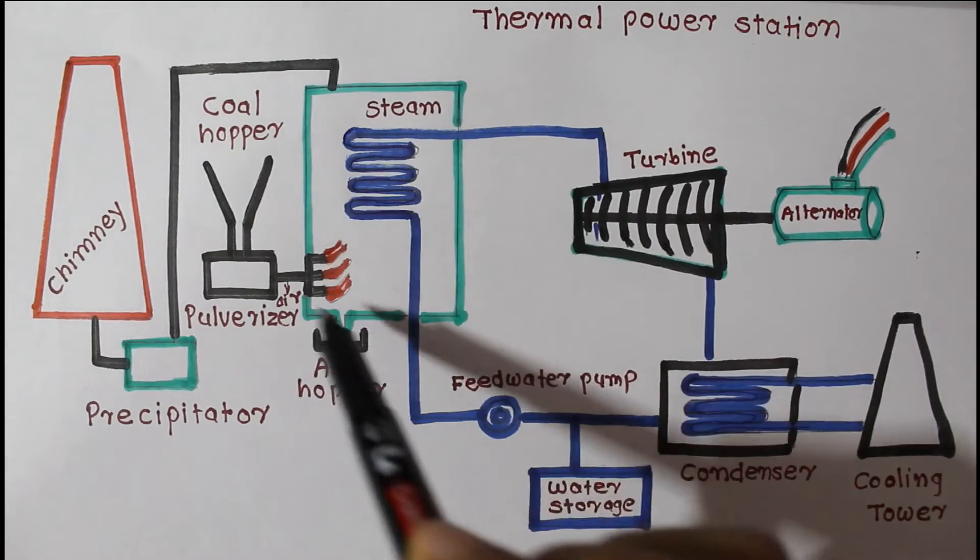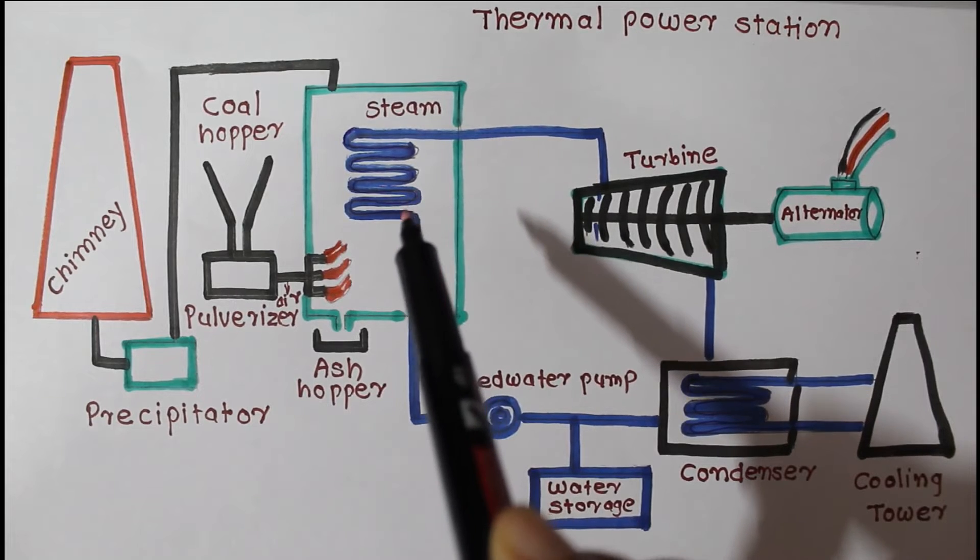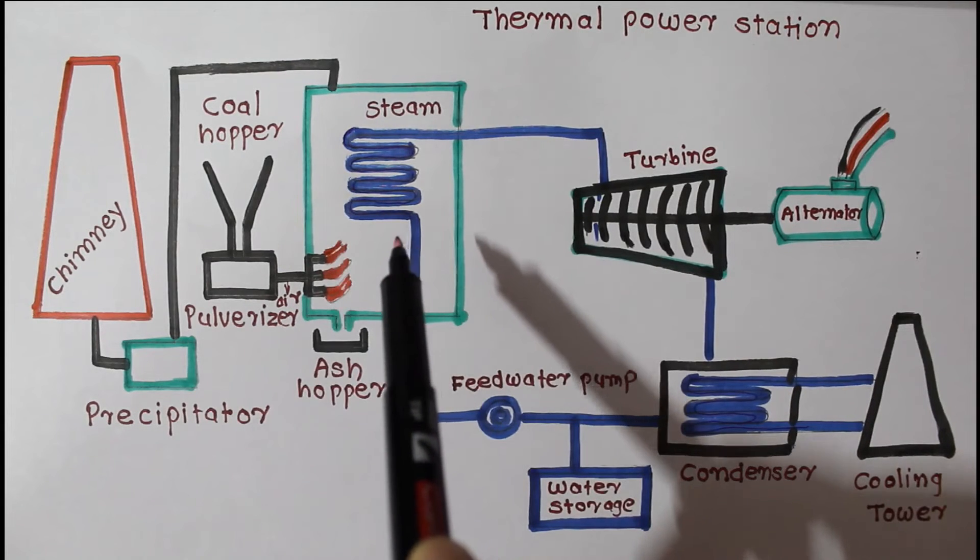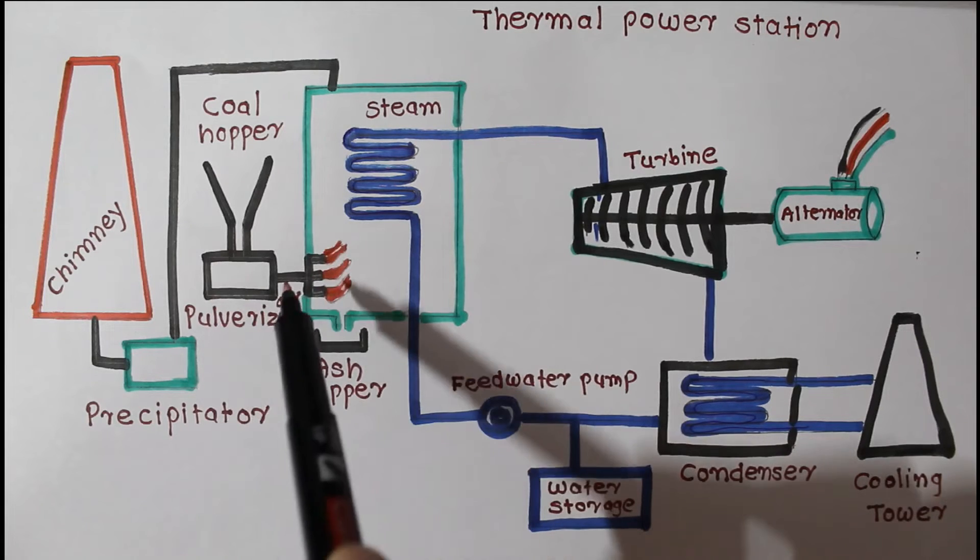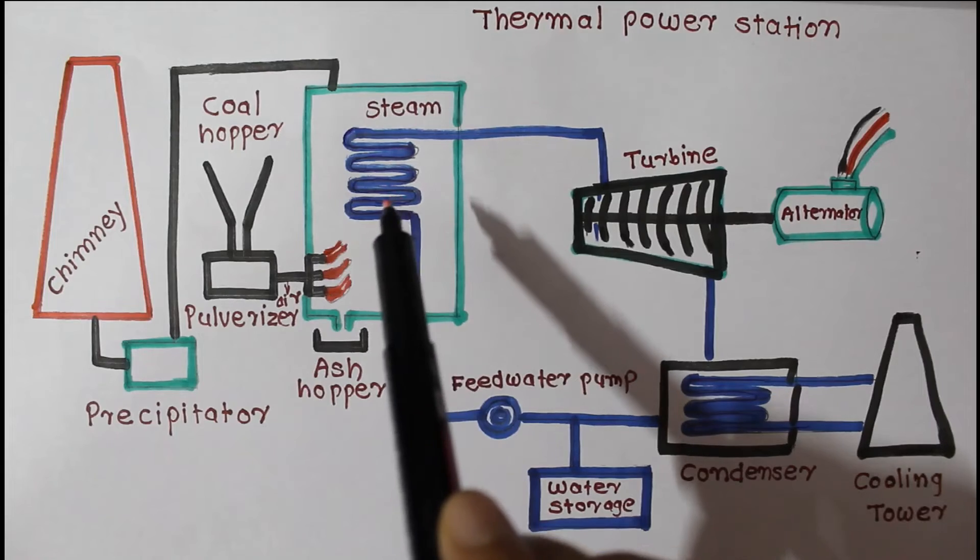Next one is this boiler which is very important. The function of boiler is to generate steam at desired pressure and temperature by transferring heat produced by burning of fuel. Here we use coal as a fuel in furnace to change water into steam.